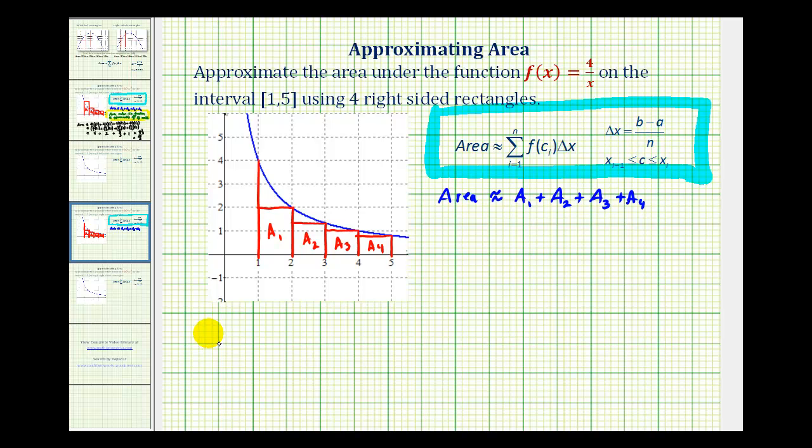Let's go ahead and set this one up. The area is going to be approximately equal to the sum of these 4 areas, where area sub 1 is f(2) times 1—the height times the width—plus area sub 2 will be f(3) times 1, plus area sub 3 will be f(4) times 1, and area 4 will be f(5) times 1.